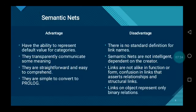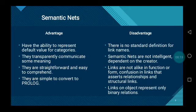Semantic nets have both advantages and disadvantages. The advantages of semantic nets are: they have the ability to represent default values for categories; they transparently communicate some meaning; they are straightforward and easy to comprehend; and they are simple to convert to Prolog. The disadvantages of semantic nets are: there is no standard definition for link names; semantic nets are not intelligent and are dependent on the creator; links are not alike in function or form; there is confusion in links that assert relations and structural links; and lastly, links on objects can represent only binary relations.